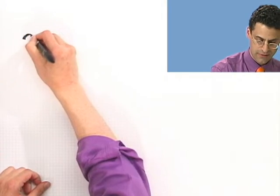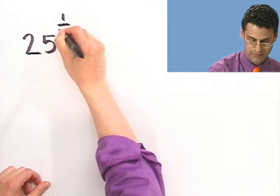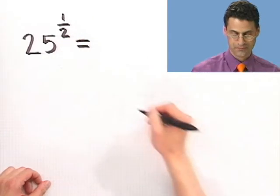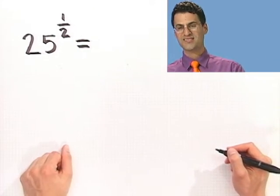For example, let's try 25 to the 1 half. Here's a great mistake. Here's a great mistake. This one is one of my favorites.